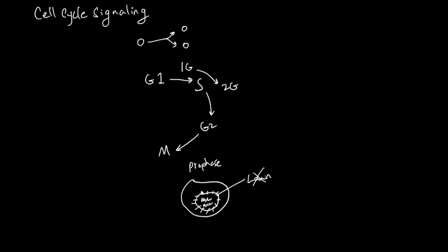Microtubules can now get in and access the genome. After prophase comes metaphase. Now you don't have the nuclear envelope anymore, and the microtubules grab the sister chromatids — the identical two copies of each chromosome. These include chromosome 2, chromosome 4, chromosome 8, and more.